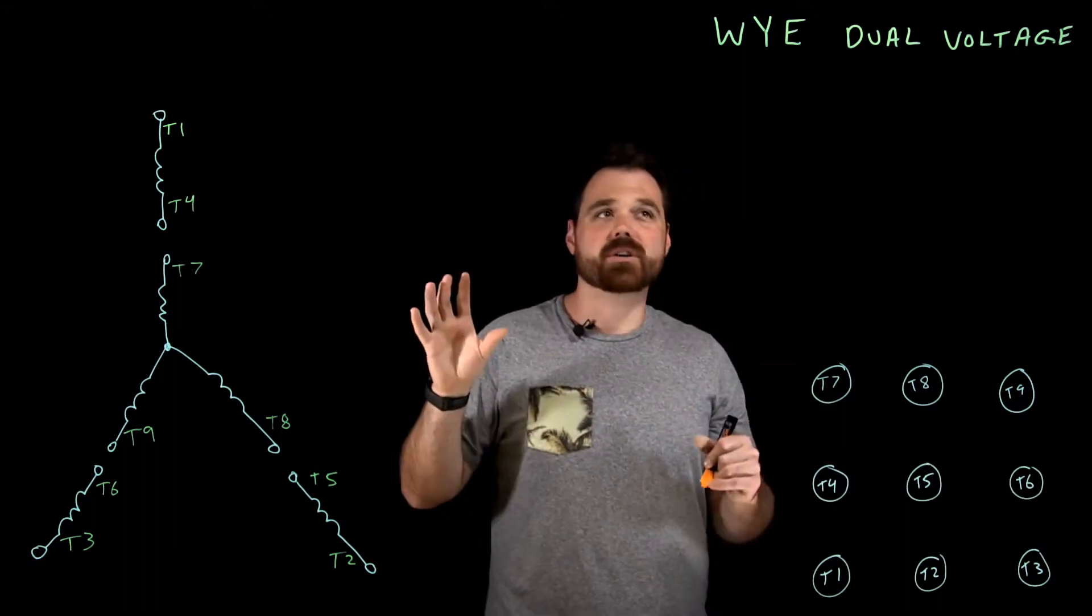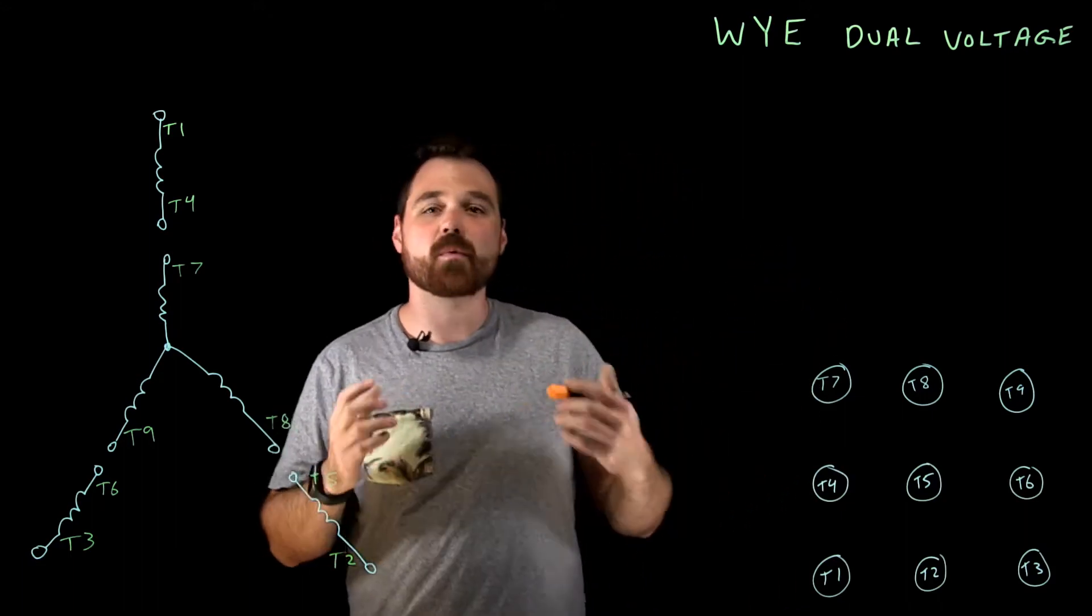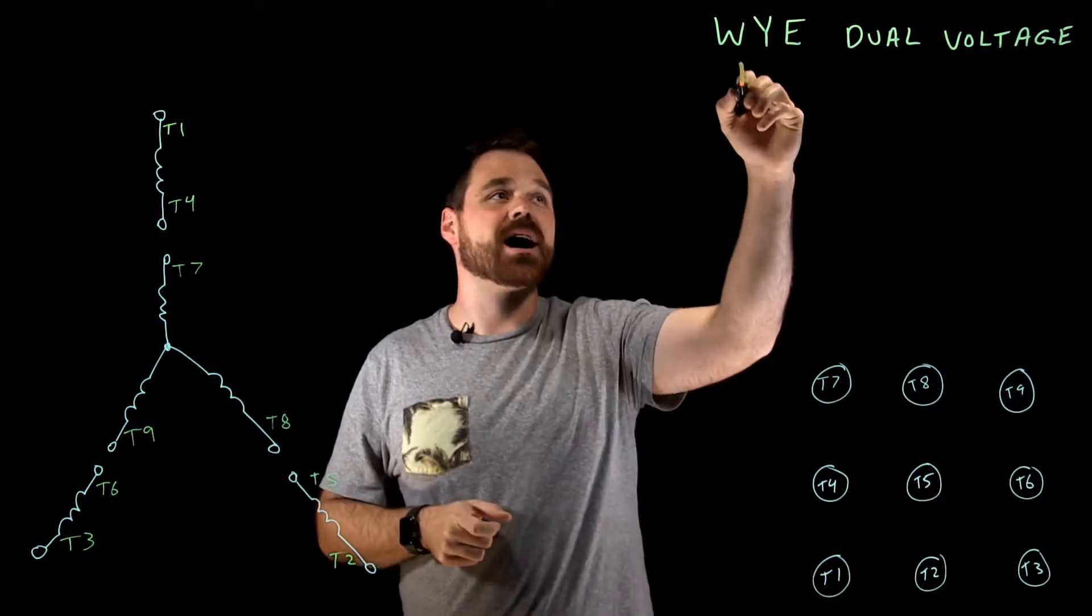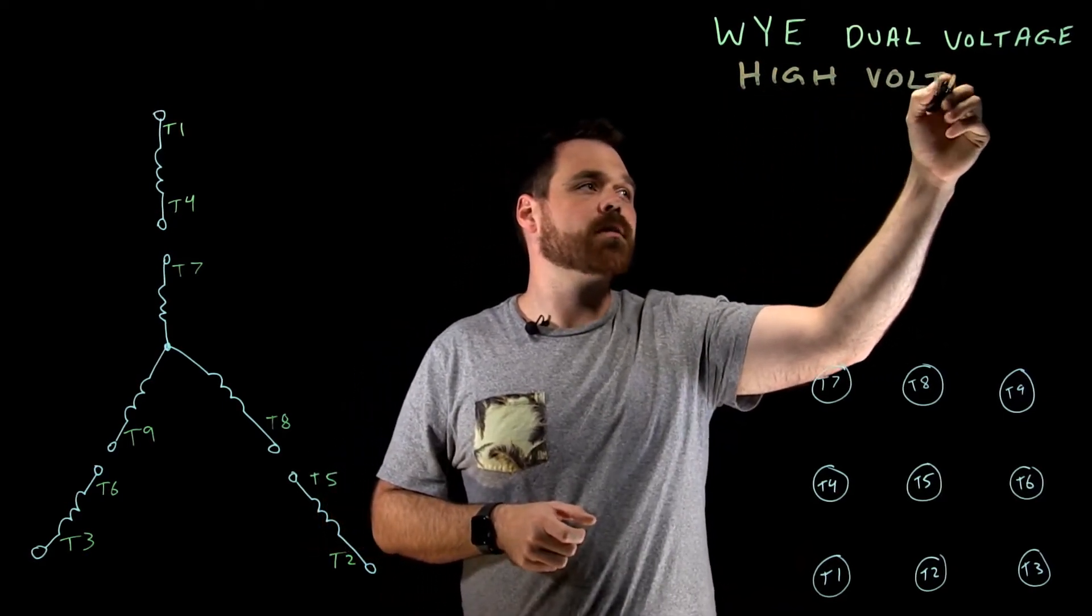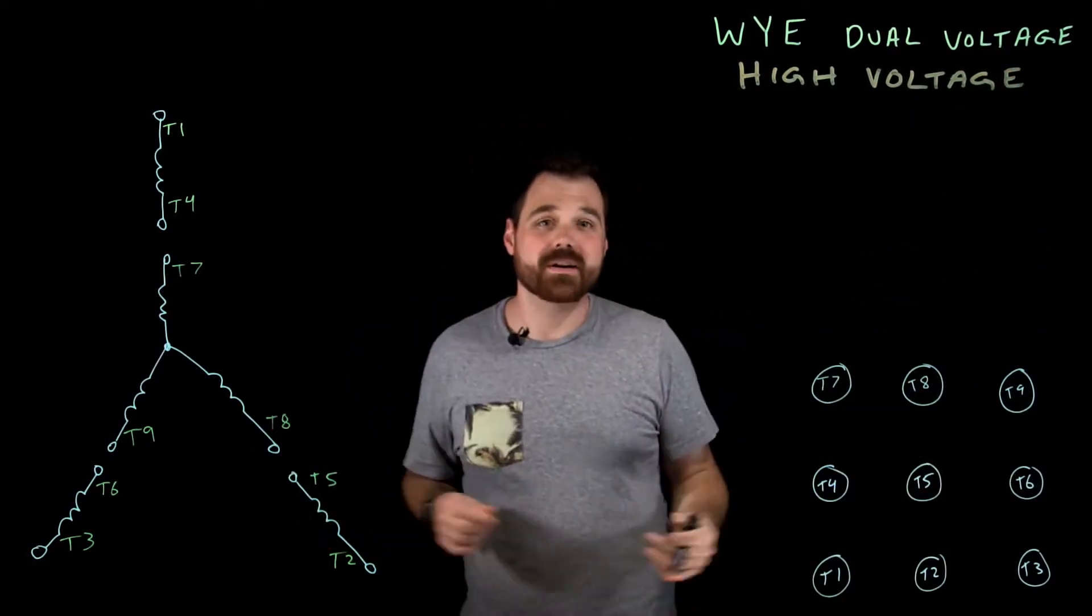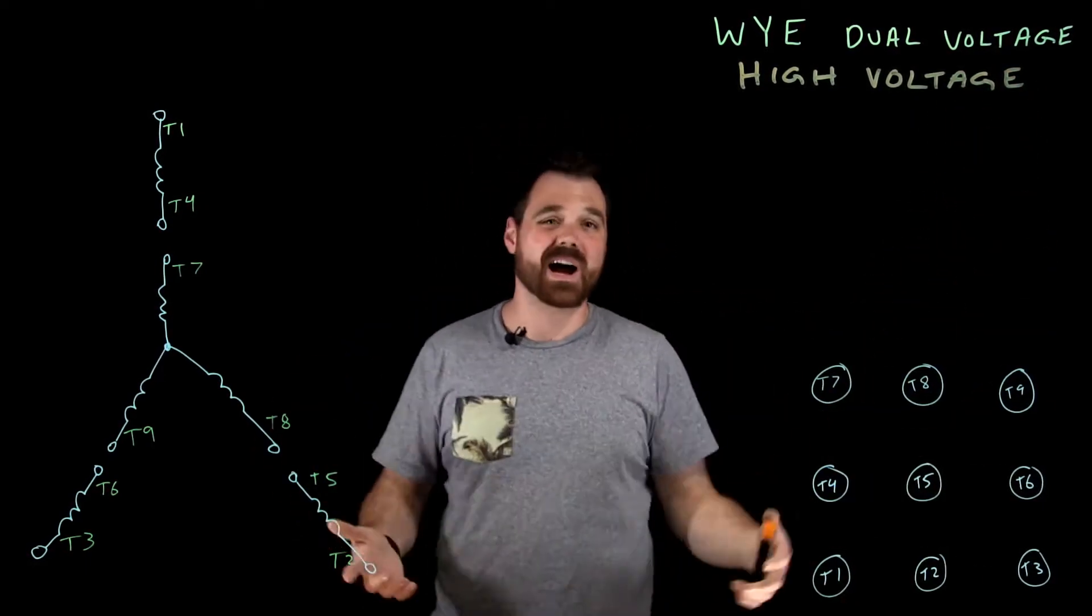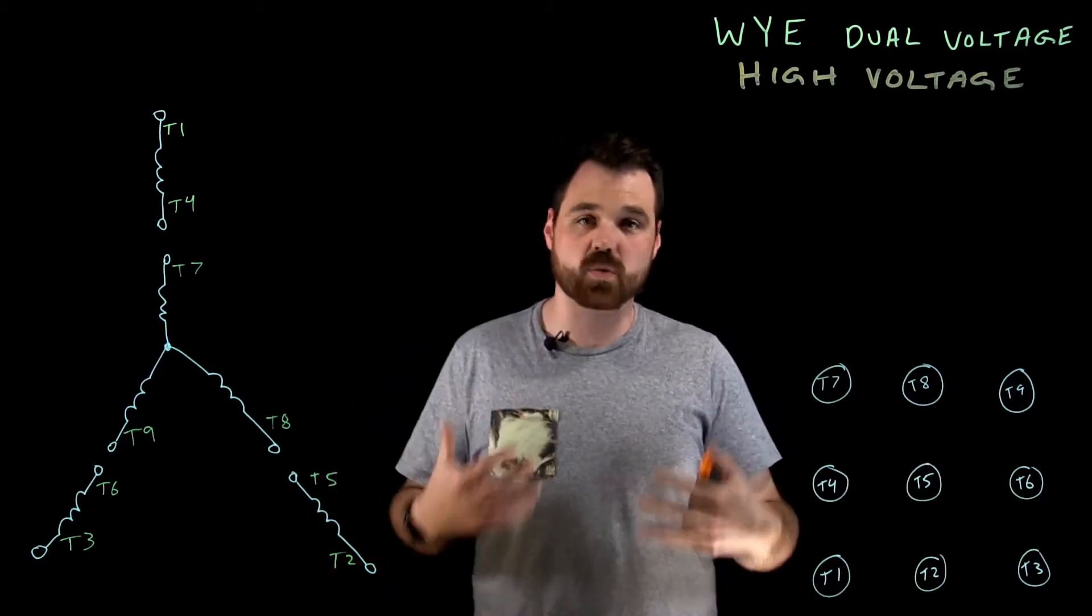In this case, we're going to talk about a Y dual voltage nine lead motor, and we're going to talk about terminating it in its high voltage connection. So the idea behind this Y motor is I can connect it to a low voltage or a high voltage depending on how I connect those windings.